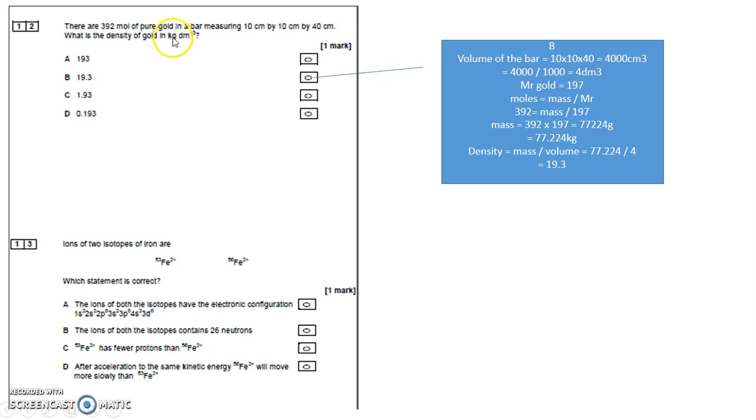Now here it says it wants in kilograms per decimeter cubed. So to get centimeter cubed into decimeter cubed, up into a larger unit, I've got to divide by 1000. 4000 divided by 1000 is 4 decimeter cubed.